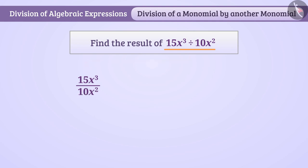Now we will write both numerator and denominator in the form of their factors. Here, we can write 15x cube as 3 multiplied by 5 multiplied by x multiplied by x multiplied by x, and 10x square as 2 multiplied by 5 multiplied by x multiplied by x.